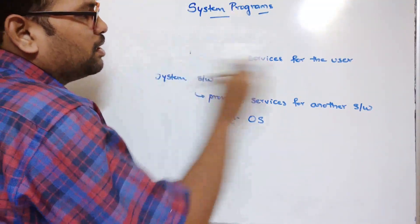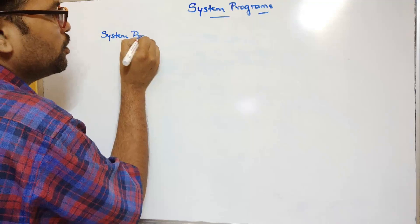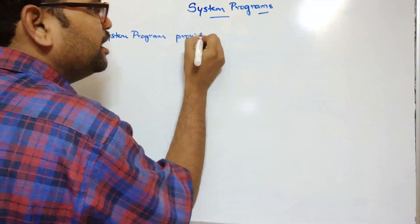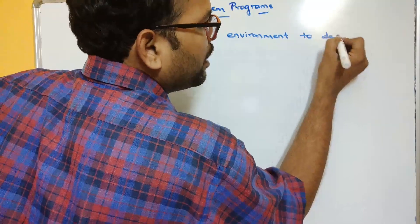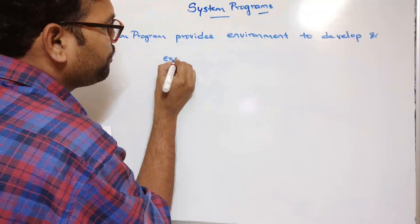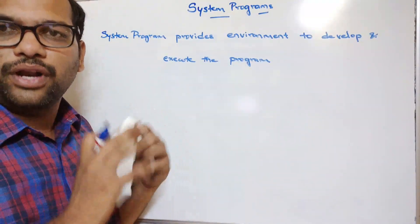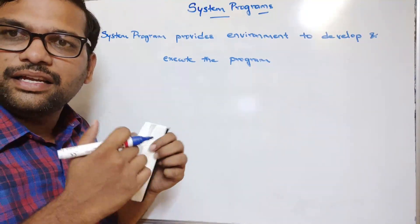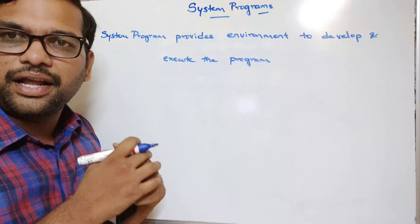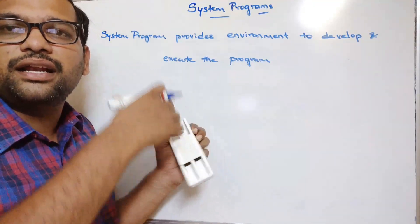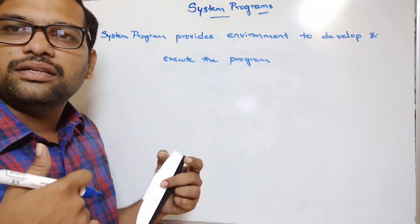The system program provides an environment to develop and execute programs. This system program lies in between the user interface and the system calls. Users can't interact with system calls directly, so with the help of system programs, the user can interact with the system calls — that's why the system program lies in between the user interface and the system calls.